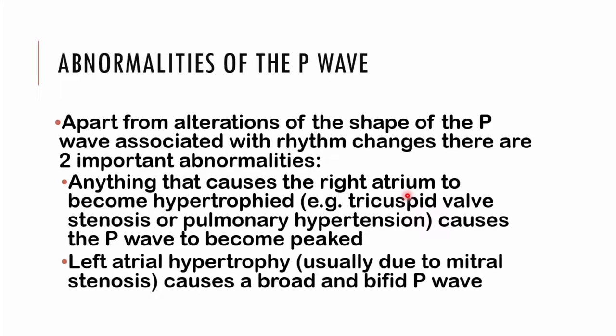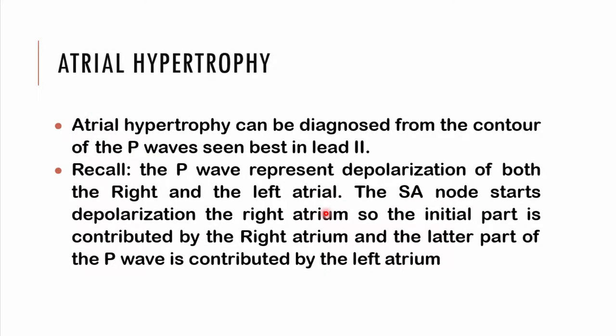We'll begin with abnormalities of the P wave. Apart from alterations of the P wave shape associated with rhythm changes, there are also two other important abnormalities relating to hypertrophy of the atrium. Anything putting strain on the right atrium will cause it to hypertrophy — such as tricuspid valve stenosis or pulmonary hypertension — resulting in a peaked P wave. The depolarization of the atrium is symbolized by the P wave, and the impulse starts from the SA node in the right atrium then spreads to the left atrium, so the initial part of the P wave is contributed by the right atrium.